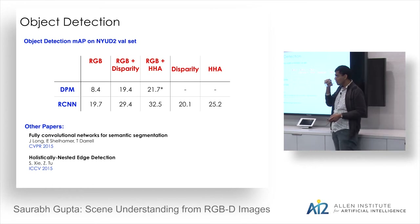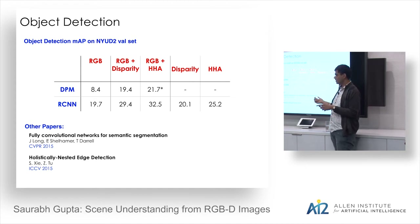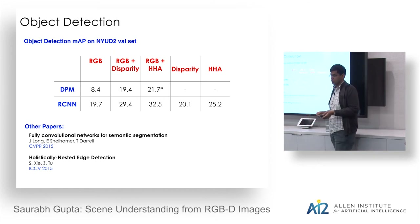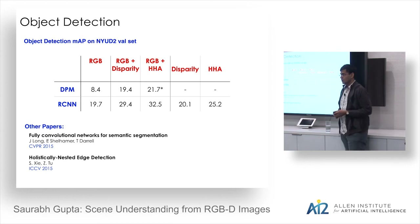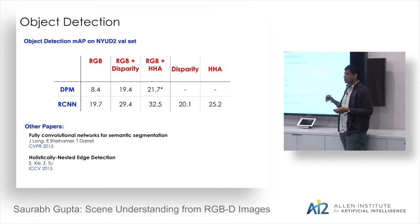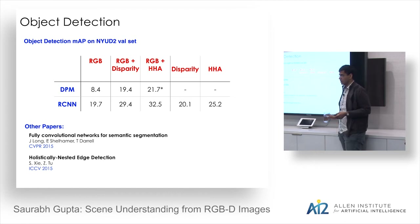Q: Have you tried surface normals as a baseline? A: Surface normals don't have depth discontinuities, which are important — so you'd want to use them together with the depth image. The angle with gravity is actually shared with surface normals, so the main additional thing is height above ground. That ablation hasn't been run yet but is a good experiment to try.